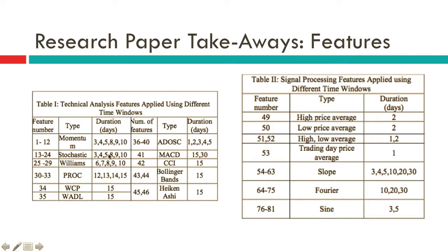As a quick recap, we created all these feature functions, and each function was built to take a list of periods as an input. You can see this duration column here — this is the key that we're going to pass for each feature function. For MACD, for example, we have 15 and 30, but two MACD duration keys will only create one column of feature data, so there are a couple of special cases I'll show you how I handle.